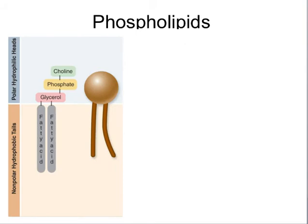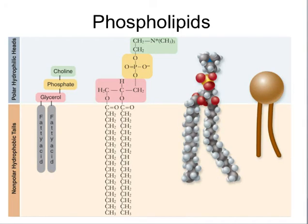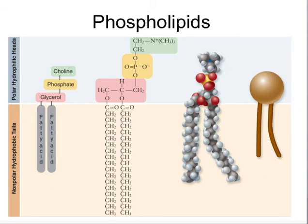The tails are fatty acid chains attached by a glycerol, which in turn attaches to a phosphate group. Some also have a choline group. This gives the phospholipid its structure: the phosphate portion, with all its oxygens, is a very negative and polar region — oxygen being highly electronegative, attracting electrons — making this part highly polar, highly charged, and hydrophilic. The other part, composed of long chains of carbon and hydrogen, is not very charged and, as the name suggests, is lipid — so these molecules don't want to interact with water. They are hydrophobic.